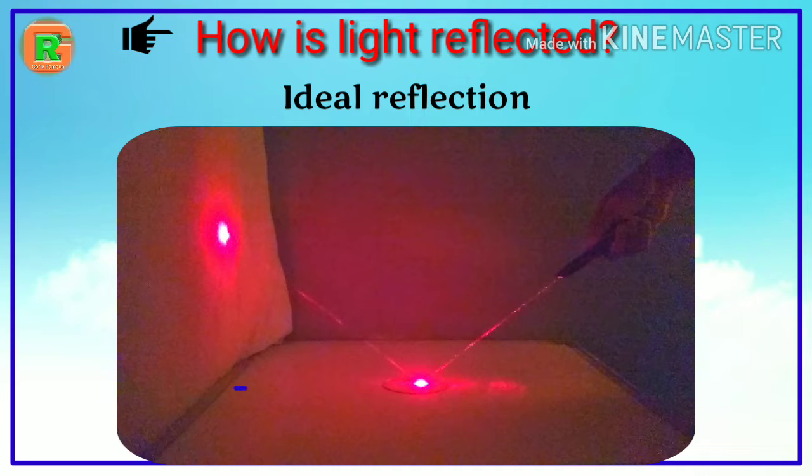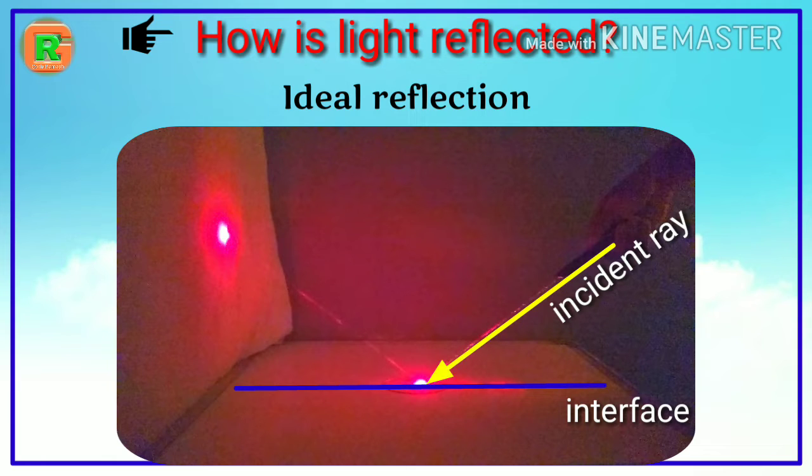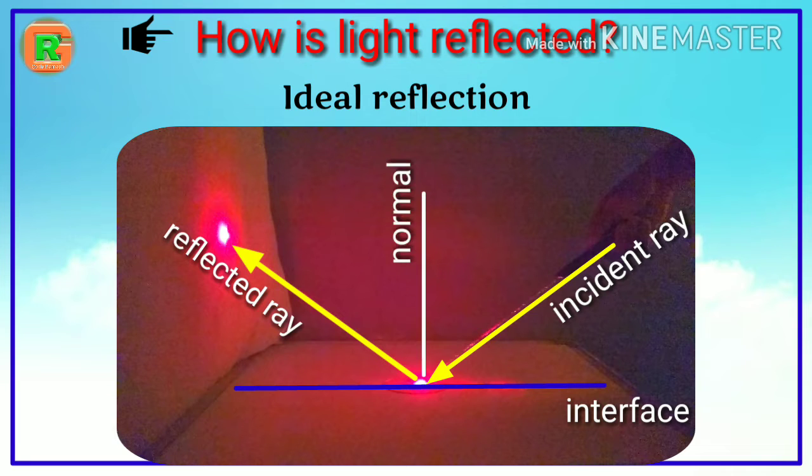Let the surface of the mirror is interface between two media. Let us take this ray is incident on the surface of the mirror at a particular point. And now this is the reflected ray from that point. Let us imagine a normal to the surface area at the particular incident point. This is the angle from the normal to the incident ray is called angle of incidence. And this is the angle from the normal to the reflected ray is called angle of reflection.